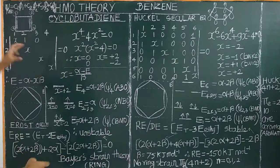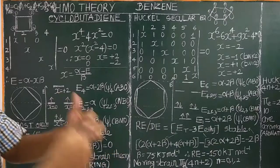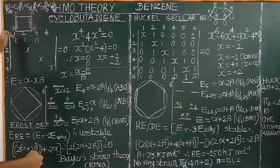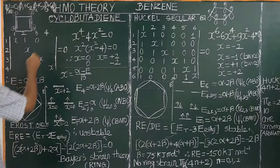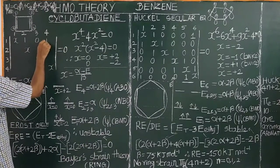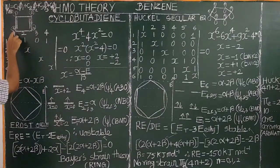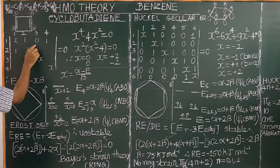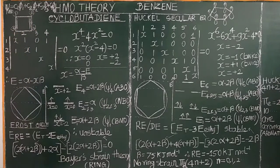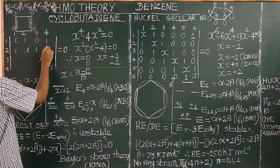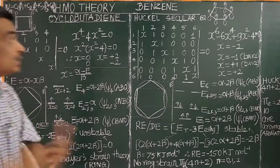In cyclobutadiene, the 1st and 4th carbon atoms are adjacent because it is a cyclic structure. Carbon 2 and 3 are adjacent, so the element is 1. Carbon 2 and 4 are not adjacent, so the element is 0. This is how the secular determinant is constructed.